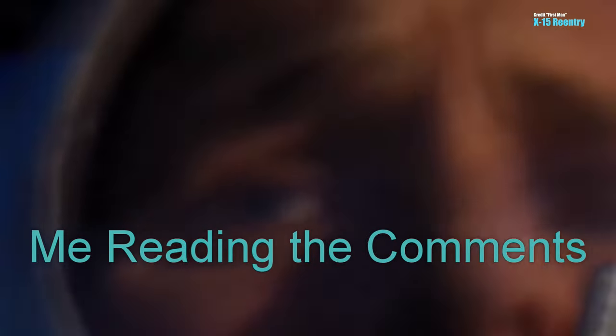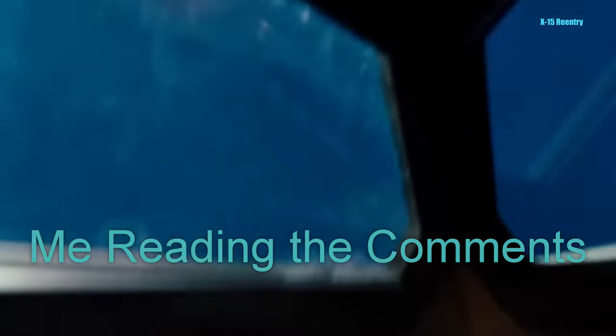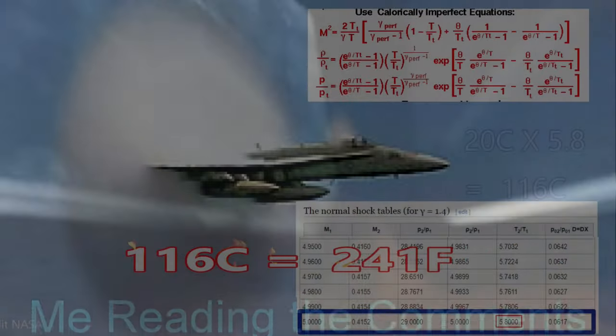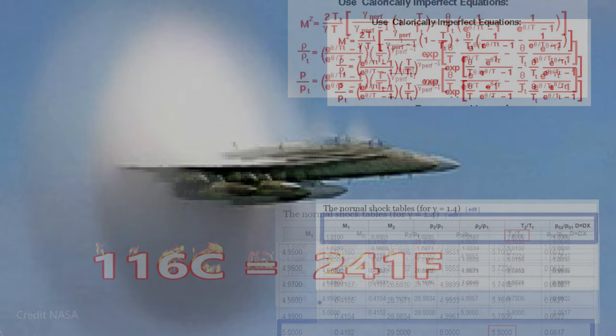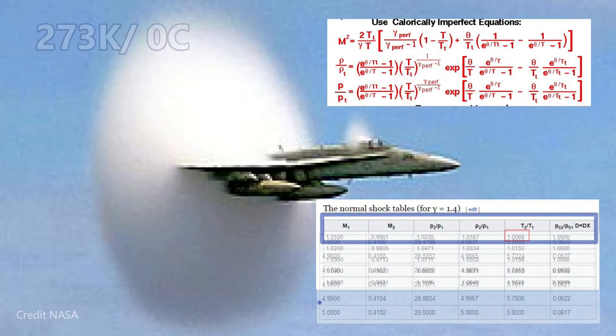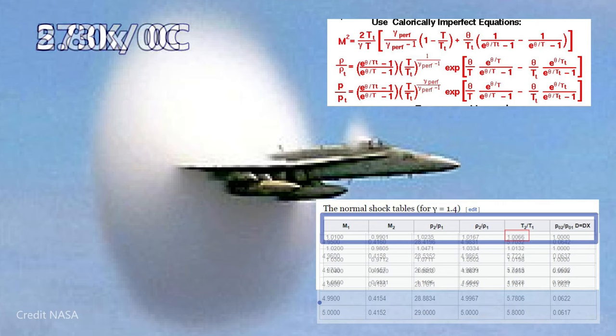I know that when the X-15 went hypersonic, the floor of the aircraft became red-hot. This would not have happened to Inconel at 116 Celsius. It should have been obvious, and if I had rechecked my calculations, I would have realized that by using Celsius, I was not using an absolute scale of temperature, as you must in these equations. What if the temperature had been zero Celsius? Would we then calculate that T2 was also zero? That's ridiculous.